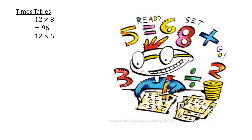12 times 6 equals 72. Addition. 94 plus 35 equals 129.